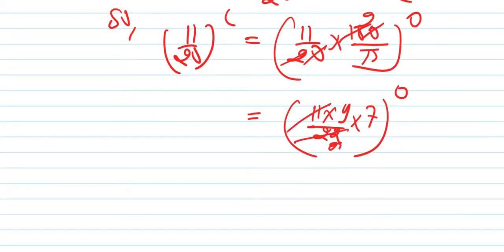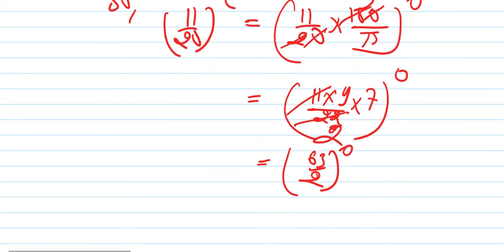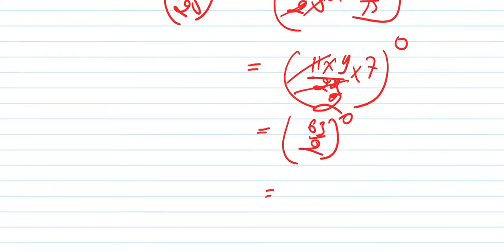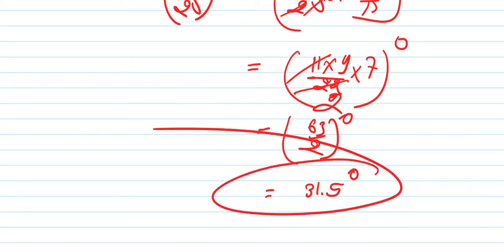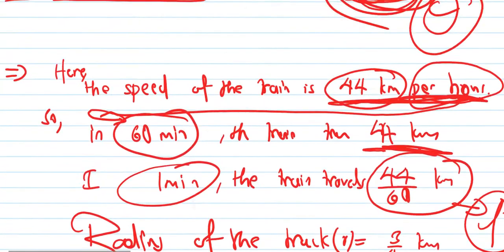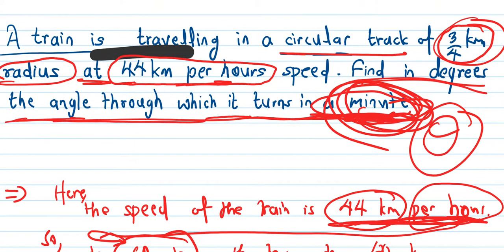This gives us 63 by 2 degrees, which equals 31.5 degrees. The train turns 31.5 degrees in one minute.